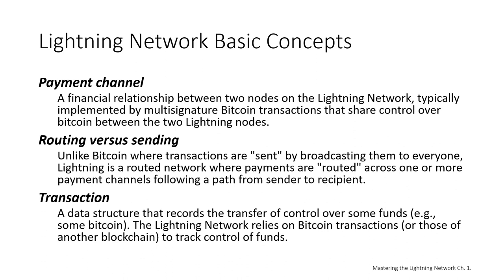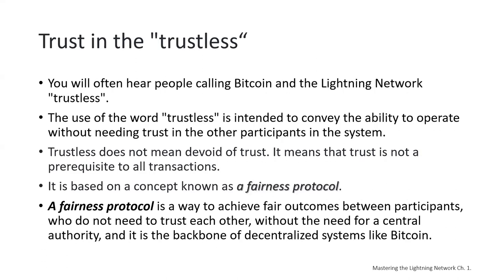Throughout these lectures, I'm going to explain what these concepts mean and how these technologies actually work. Now that you're familiar with these basic terms, let's move to a concept you may already be comfortable with: trust, and how trust works in a decentralized network like Bitcoin or Lightning. You'll often hear people calling Bitcoin and Lightning trustless. At first glance, this is confusing — after all, isn't trust a good thing? Banks even use it in their names.